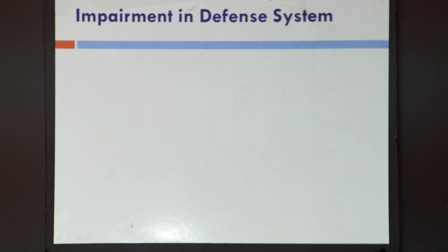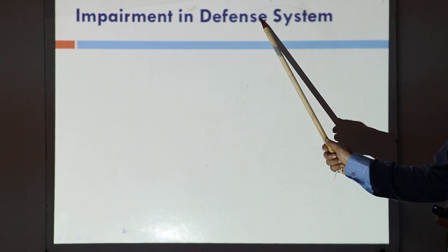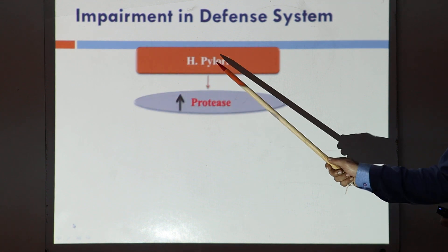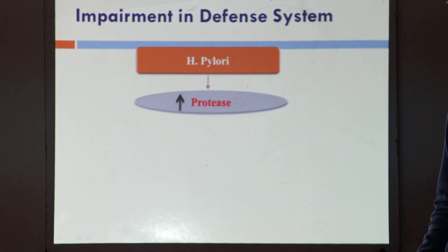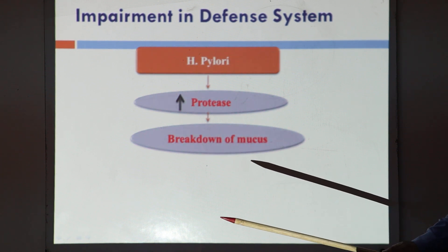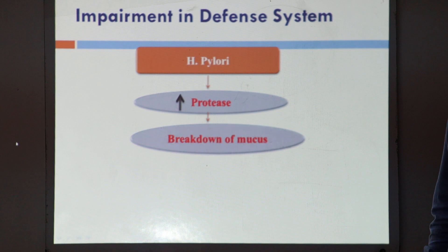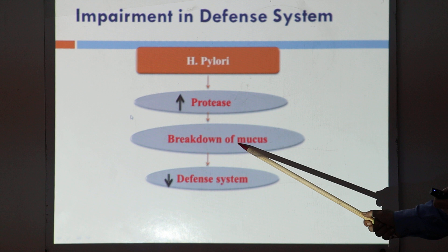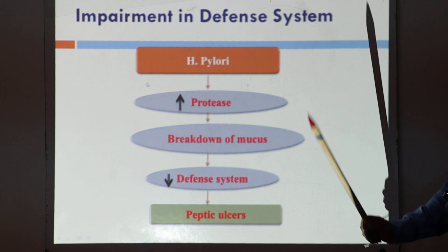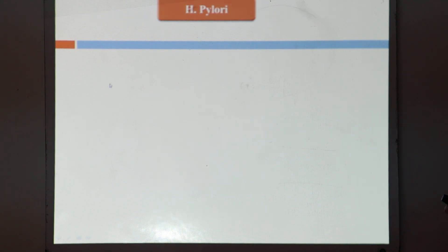Second mechanism: the protective defense mechanism is also impaired. H. pylori releases a number of enzymes called proteases, which can degrade proteins. These proteases break down the mucus — mucus consists of water plus proteins, and the protein portion is broken down by the protease. When mucus is broken down, the defense mechanism is compromised, and ulceration can take place.